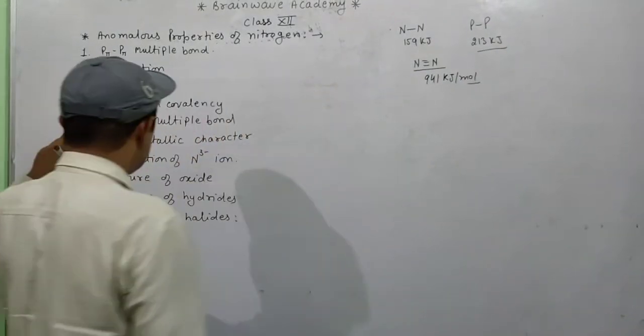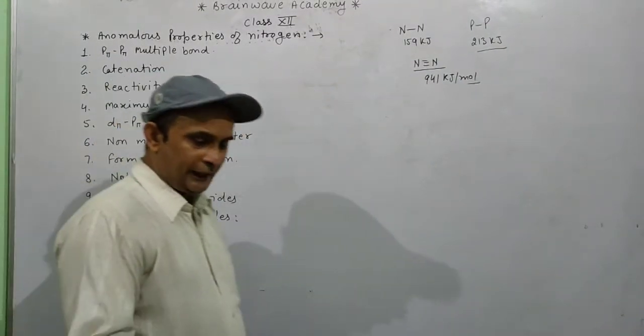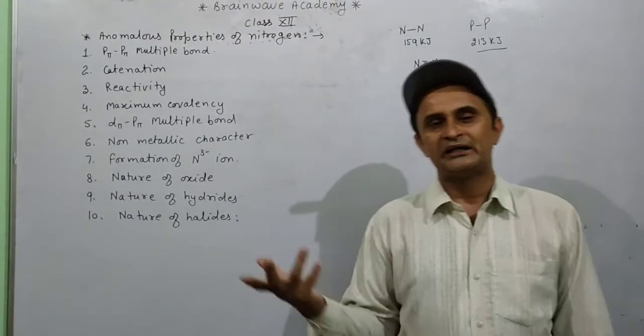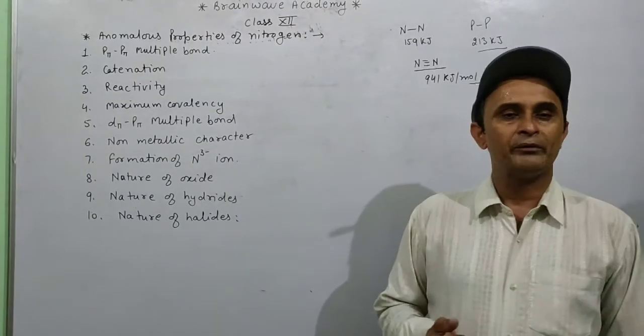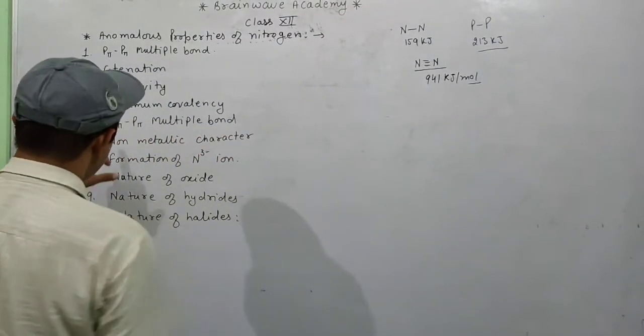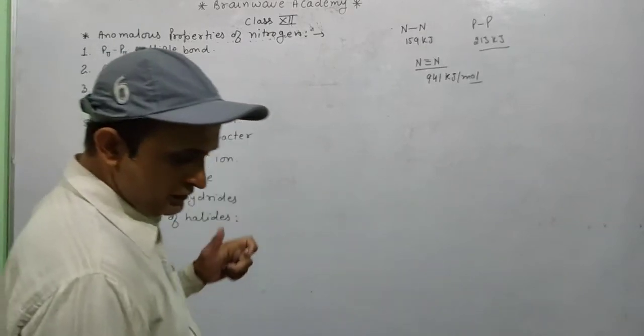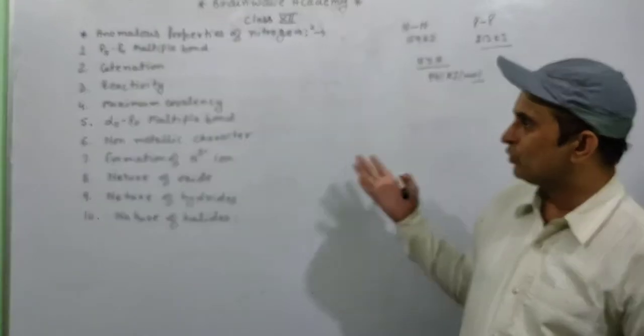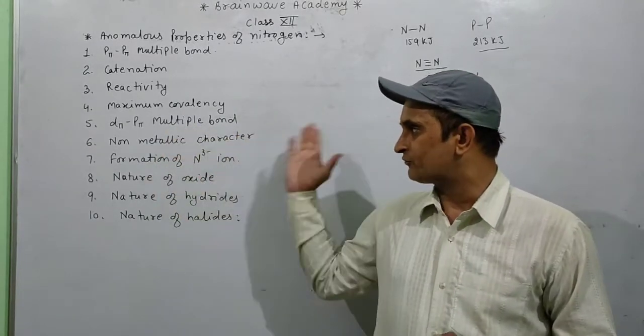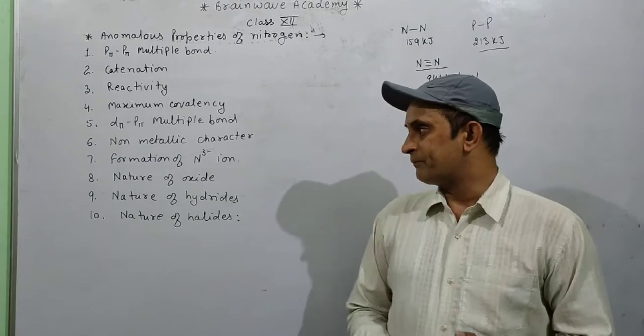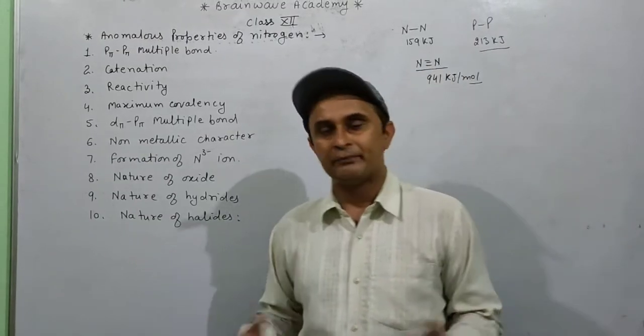Maximum covalency: due to absence of d orbital, nitrogen can have covalency 4, but other group members can extend their covalency to 5 or 6. Other group members have d orbital but nitrogen does not have d orbital, so it cannot form d pi-p pi multiple bonds.